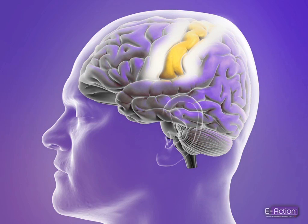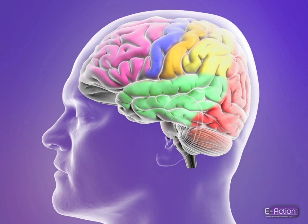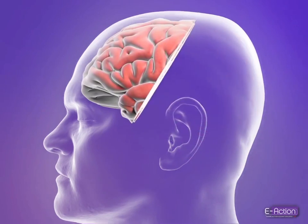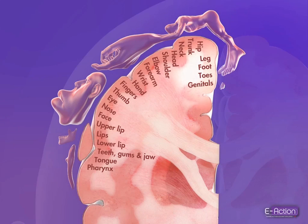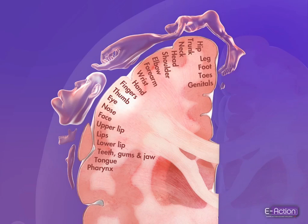The sensory cortex also has specific regions that direct sensations of all parts of the body. If a focal seizure occurs in this part of the brain, it will affect sensations to a specific part of the body. A cut section through the motor and sensory cortices demonstrates how much of the brain's surface controls each region of the body. The body part affected by the focal seizure depends on the location of the neurons involved.